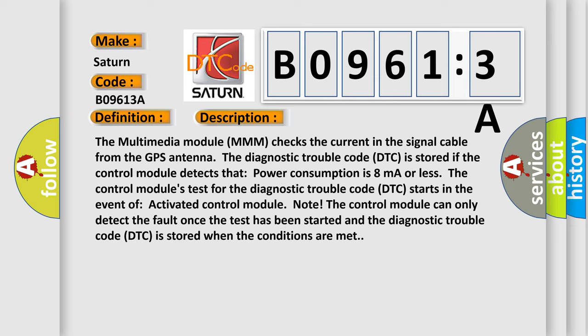The diagnostic trouble code DTC is stored if the control module detects that power consumption is 8 mA or less. The control module's test for the diagnostic trouble code DTC starts in the event of activated control module note. The control module can only detect the fault once the test has been started and the diagnostic trouble code DTC is stored when the conditions are met.